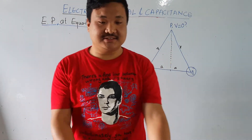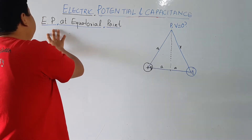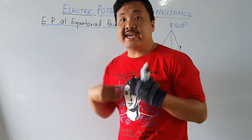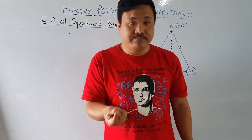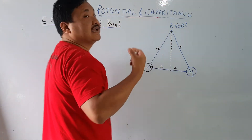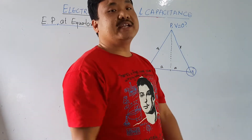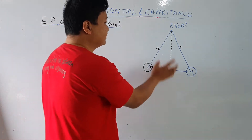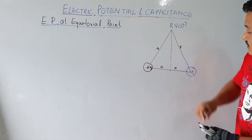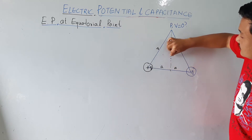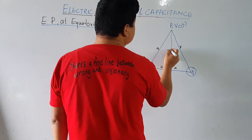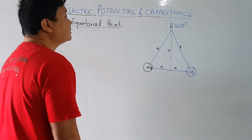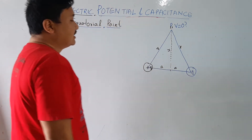In this lecture we study electric potential due to a dipole at an equatorial point. The equatorial point means the point extended from the center or midpoint of the dipole. We have plus q and minus q charges, this is the midpoint of the dipole, and if I extend to this point and call it x, that point P is at the equatorial position.